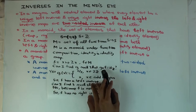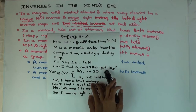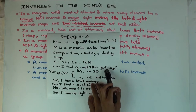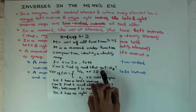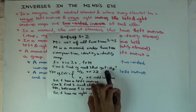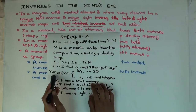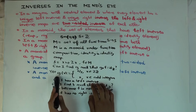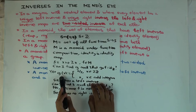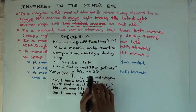In this case, g composed f is the identity. Whenever you have a composite of two things being the identity, what can you say? The thing on the right — the one you apply first — has to be injective, and the thing on the left — the one you apply later — has to be surjective, because it has to cover everything. So the left inverse of f, which is g, is surjective but not injective.